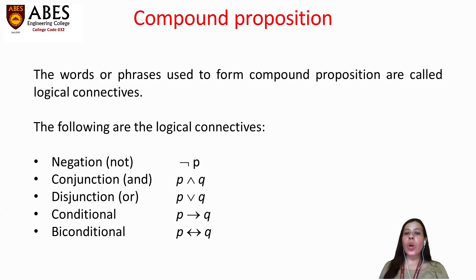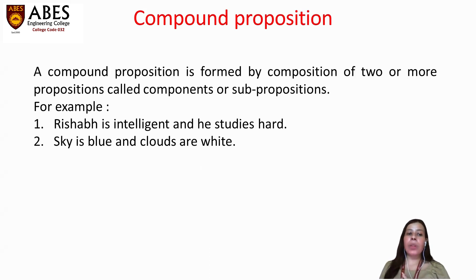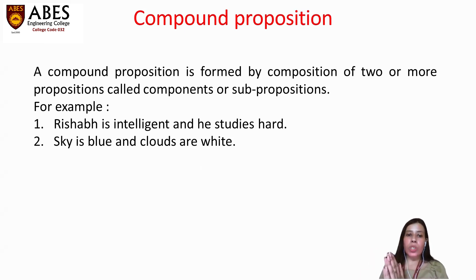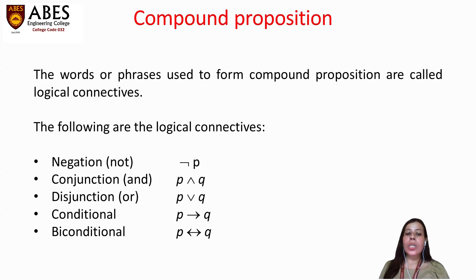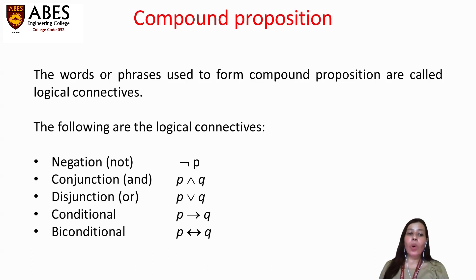The word or phrase used to form a compound proposition is called a logical connective. For example, in 'Rishabh is intelligent and he studies hard,' we combined the two propositions with the word 'and,' which is the logical connective. We generally use five logical connectives: negation (not), conjunction (and), disjunction (or), conditional, and biconditional.